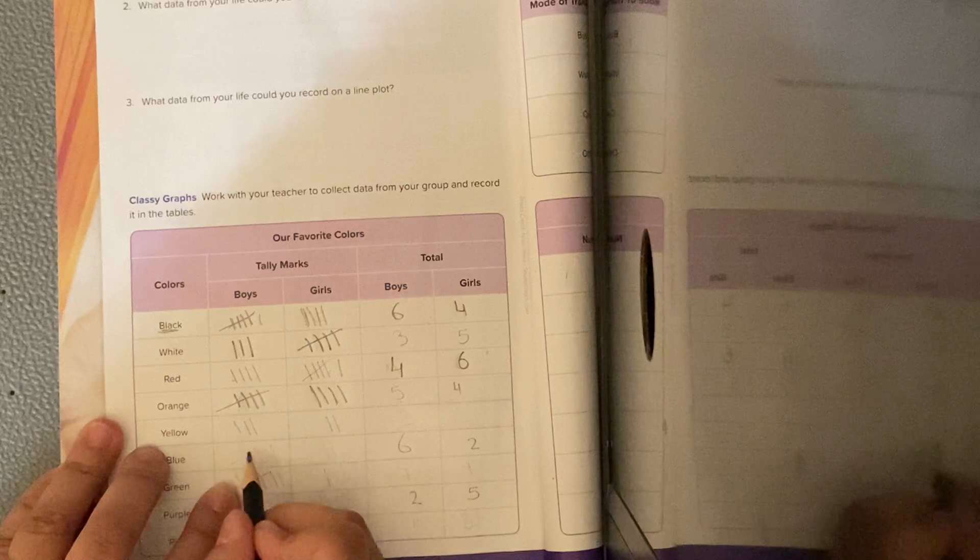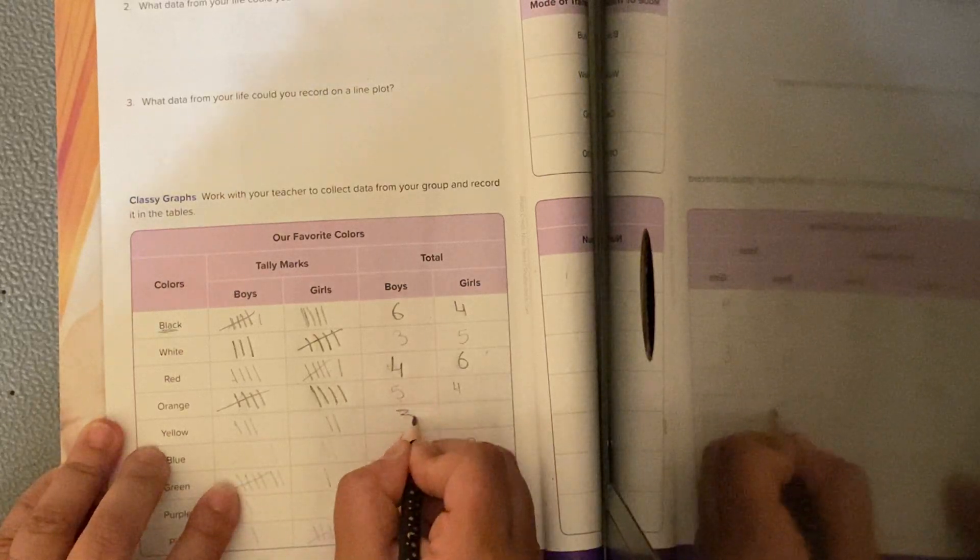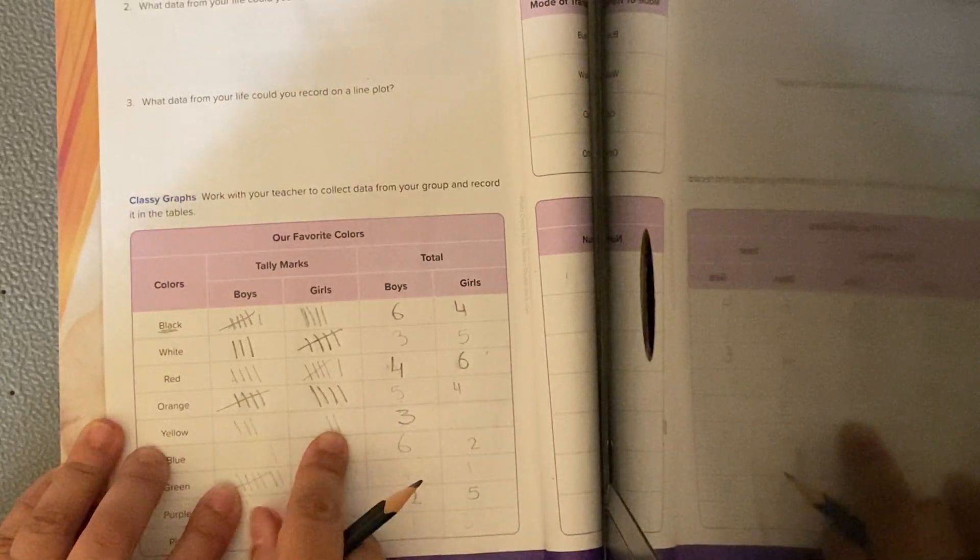The yellow. 1, 2, 3. So I am going to put the 3. How many for the girls? 2.